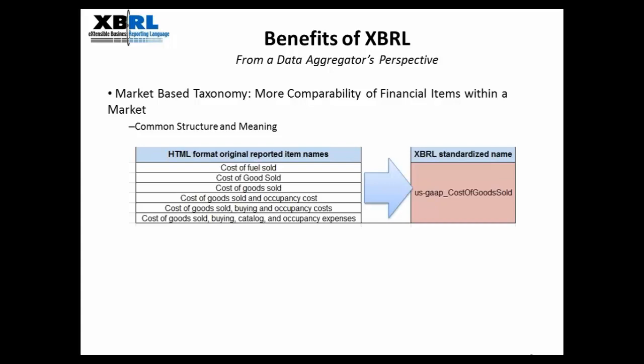Fourthly, XBRL also facilitates a market-based taxonomy, which provides more comparable financial items across companies in the market. For example, you can find different variations of cost of goods sold descriptions in HTML filings — on the left side of this table, you can see six different descriptions that could be found in HTML documents. But with the XBRL standardized tag, if companies use this tag consistently, they will all be tagged with one single cost of goods sold XBRL tag. This unifies the descriptions of accounting concepts and hence their structure and meaning across different companies within the market.